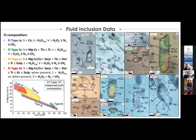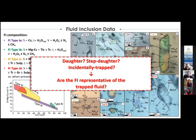Combining the Raman microanalysis data with data derived from image analysis of fluid inclusions, we were able to assess the bulk composition of 23 fluid inclusions, showing a quite wide range in the chemical variability of the fluid components. We then needed to recognize whether the included solid phases are daughter minerals, accidentally trapped minerals, or step-daughter minerals, as this directly determines the chemical representativity of the fluid inclusions.